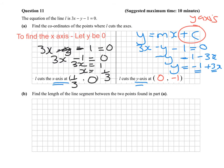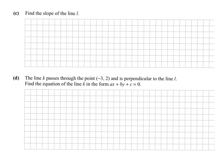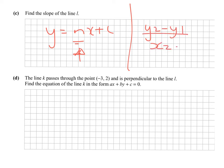Find the length of the segment between the two points found. Length — another word for distance — uses the distance formula: √[(y₂ − y₁)² + (x₂ − x₁)²]. You now have your two points (0, −1) and (1/3, 0), so apply the formula. The slope of line l was already found when writing it in y = mx + c form, giving slope = 3.